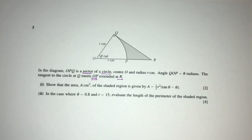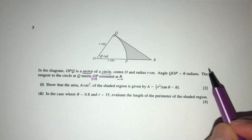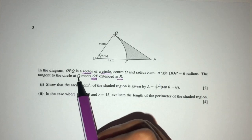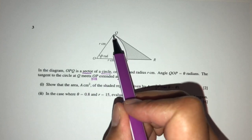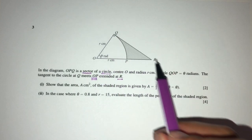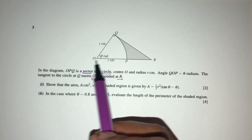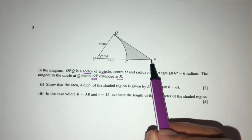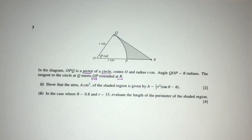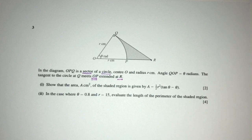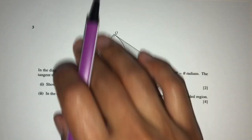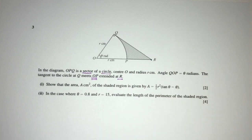As you can see, they tell you that the tangent to the circle at Q — here we have Q, and this is a tangent — it will meet OP continuing at this point. So everything here is just the same information given to you in the diagram. Now let's move on to the questions.